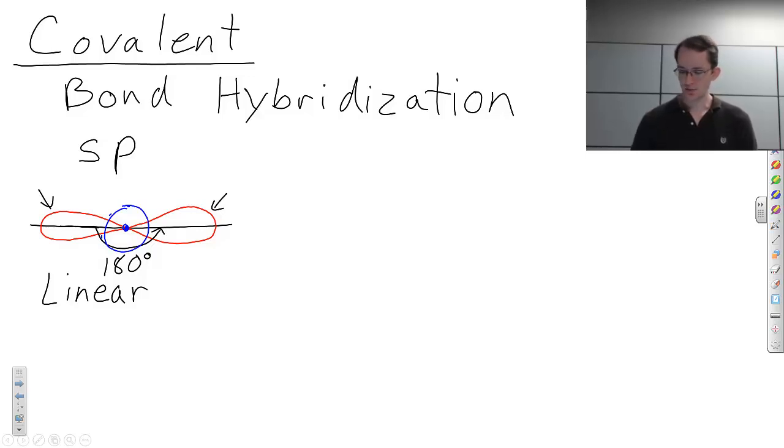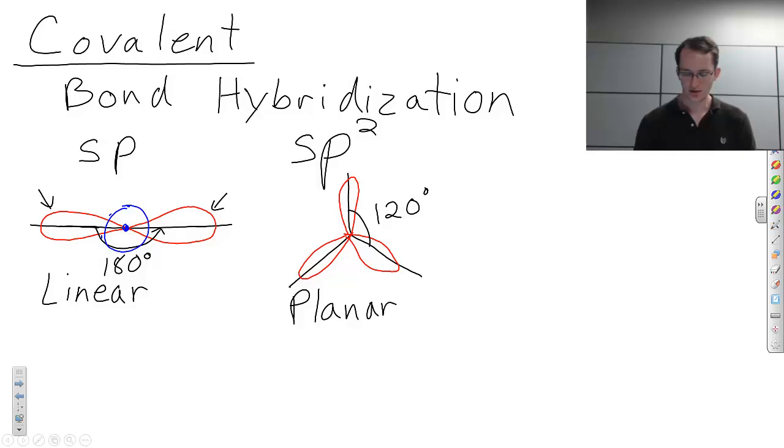There's another type of bond hybridization called sp2 hybridization. And what this looks like is inside a single plane, you will have three lobes. Lobes look very similar, but instead of being 180 degrees away from each other, the angle is 120 degrees. And this would be a planar type of bond hybridization, meaning it will bond with atoms in this direction, in this direction, and in that direction.